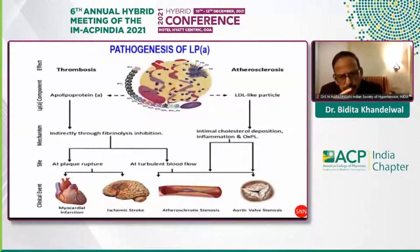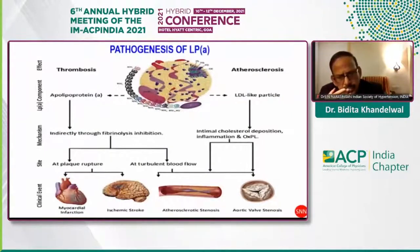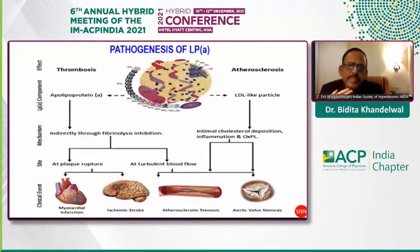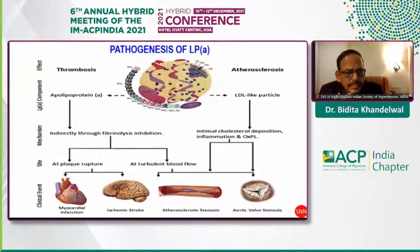What is the peculiarity of lipoprotein(a)? It has a unique structure with an Apo(a) which is closely bound to the Apo B moiety of an LDL-like particle. The Apo(a) is structured in the form of kringles, similar to plasminogen, which is responsible for inhibition of fibrinolysis. The inhibition of fibrinolysis at the site of plaque rupture can lead to myocardial infarction, ischemic stroke, and turbulent blood flow, promoting thrombosis.